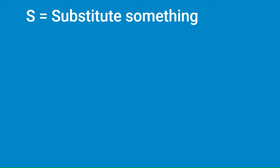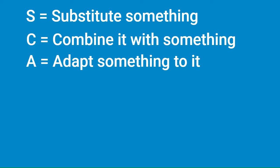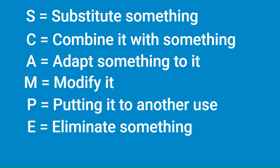Here's what SCAMPER stands for: S — substitute something; C — combine it with something; A — adapt something to it; M — modify it; P — put it to another use; E — eliminate something; and R — reverse. So with one idea and one concept, you're brainstorming different things by looking at it in all those SCAMPER ways, and it's amazing what you come up with.